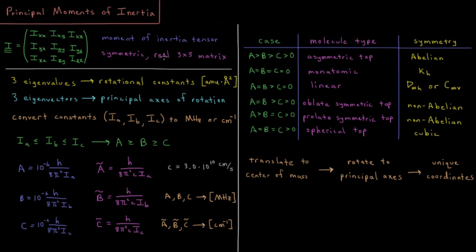This being a real symmetric 3x3 matrix, it's going to have three eigenvalues; those are going to be real as well, and these are going to be related to our rotational constants. The elements of this tensor are defined in units of mass times distance squared — atomic mass units (grams per mole) times angstroms squared — so the eigenvalues are going to have those same units.